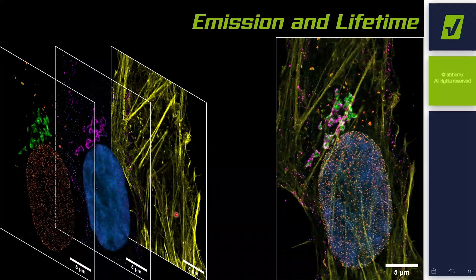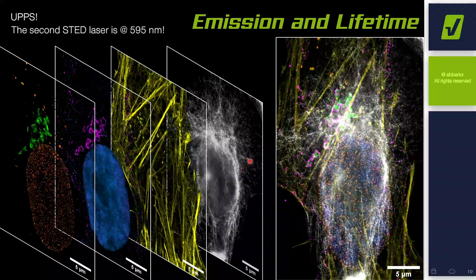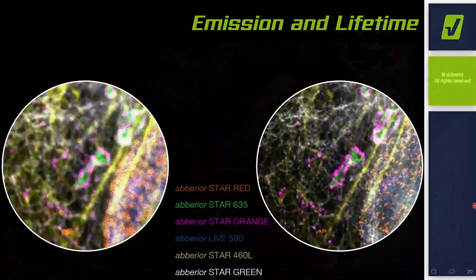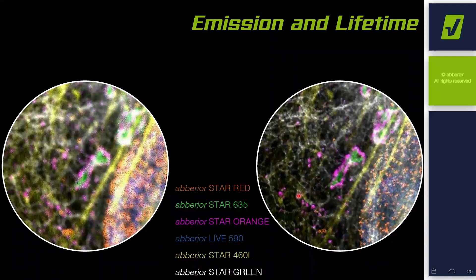With 460L actin phalloidin, we were able to stain the actin network in this fixed cell, shown in yellow. And with a second depletion laser — a 495 nm depletion laser — we can add an additional color: Star Green staining the vimentin, shown in gray. To show a comparison of confocal and STED image of the six-color image: the confocal is on the left side and the STED image on the right side. You can really nicely see the very good separation of all six colors.